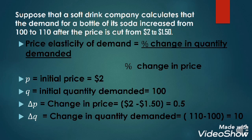Applying the formula, let us substitute the variables. P is equal to the initial price, which is $2.00. The initial quantity demanded is 100. For the change in price, we will get the difference of the original price and the new price: $2.00 minus $1.50 is equal to $0.50. And for the change in quantity demanded, we will subtract the initial quantity demanded, which is 100, from the new quantity demanded, which is 110. So, 110 minus 100 — the change in quantity demanded — is equal to 10.